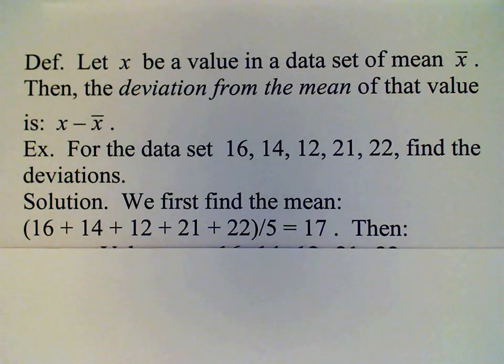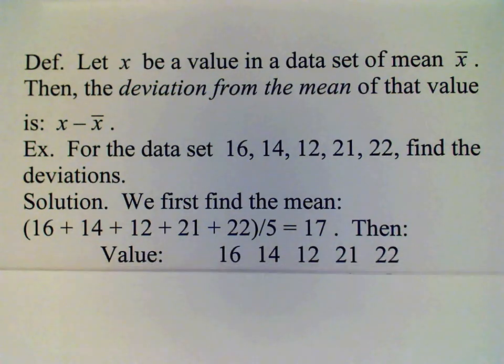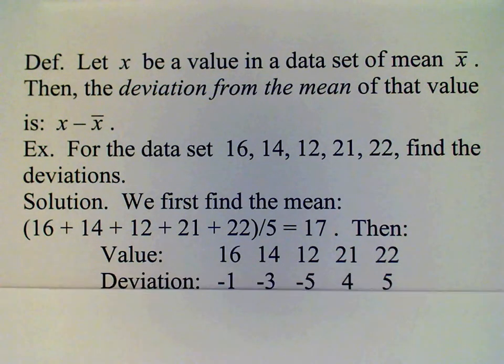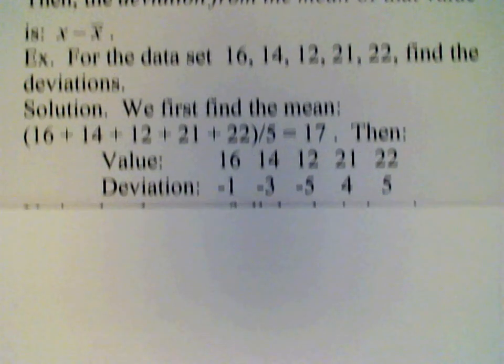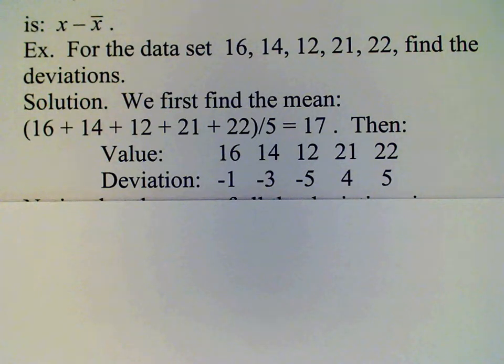We get 17. And then for each data value, we need to subtract 17 from that value to get the deviation associated with that. And the deviations that we find after subtracting 17 from each value are negative one, negative three, negative five, four, and five.